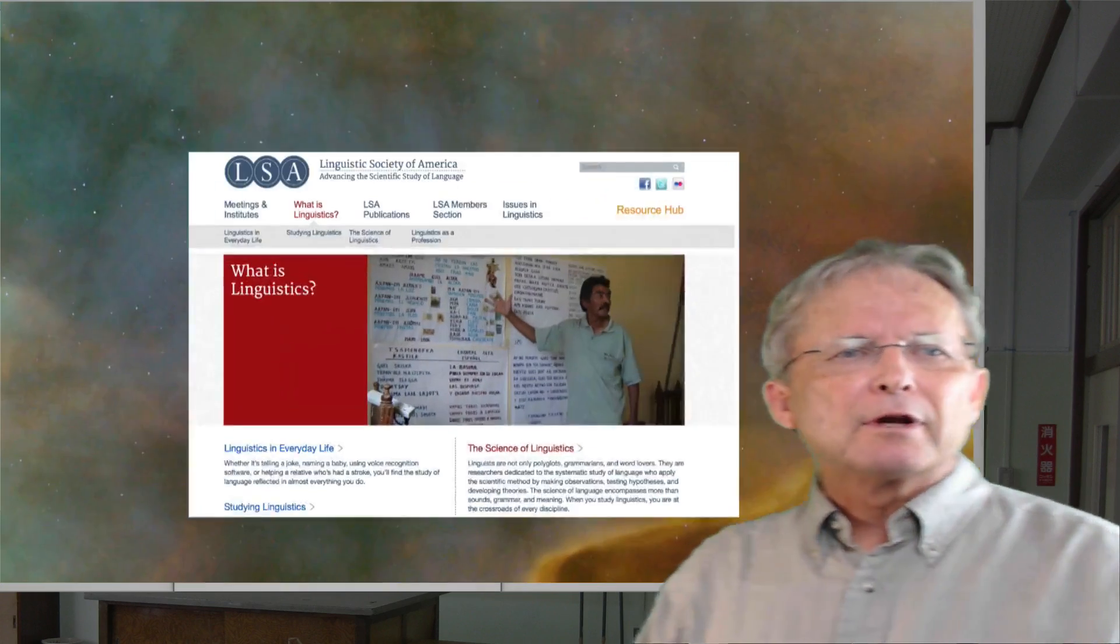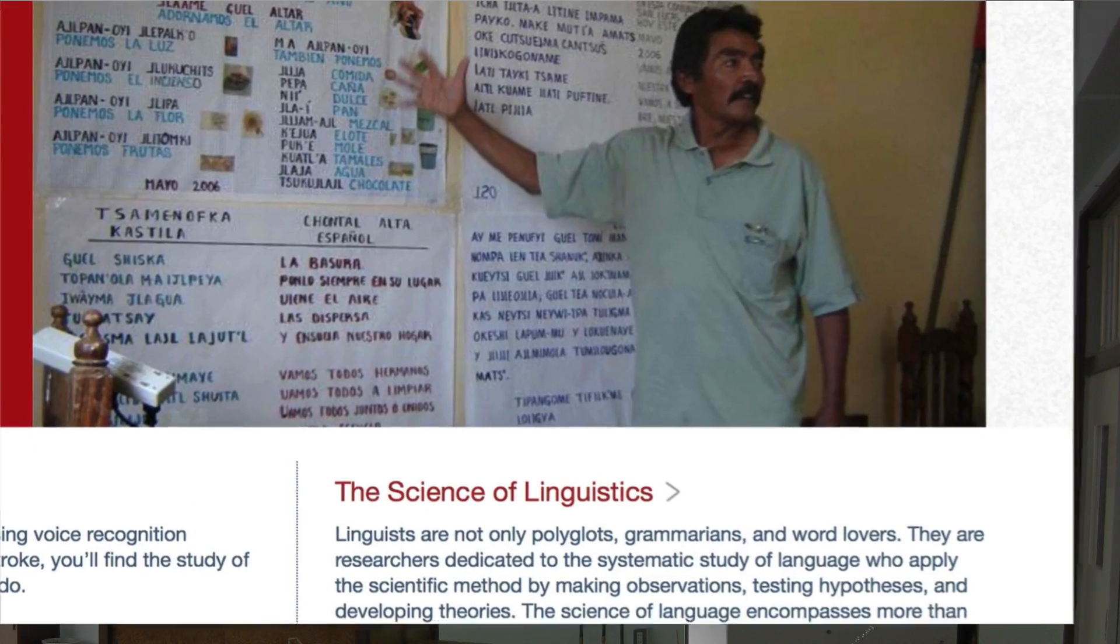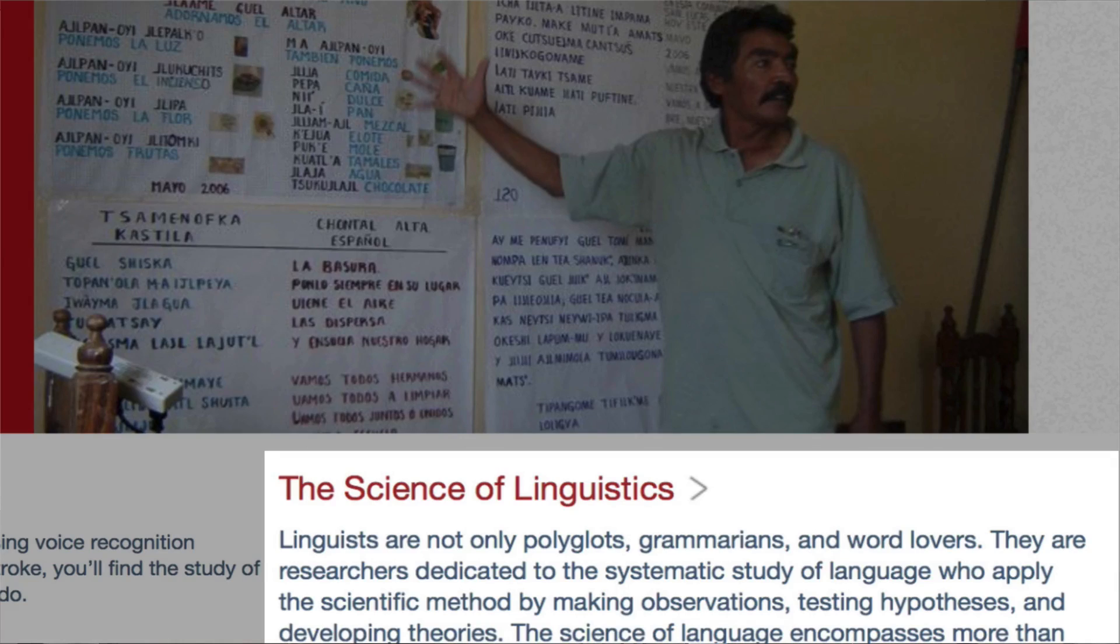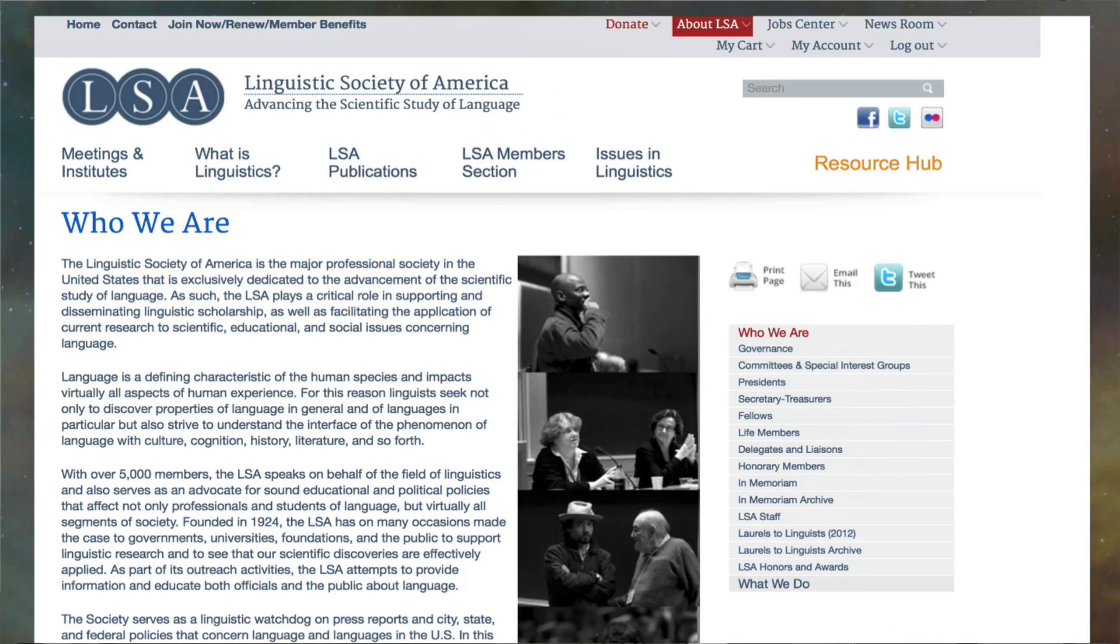On its webpage about what linguistics is, the Linguistics Society of America notes that linguists are not only polyglots and word lovers, but are dedicated to the systematic study of language and apply the scientific method by making observations, testing hypotheses and developing theories in a quest to deepen our understanding of what language is and how it works as a cognitive capacity of human beings and a foundational tool for culture and society.